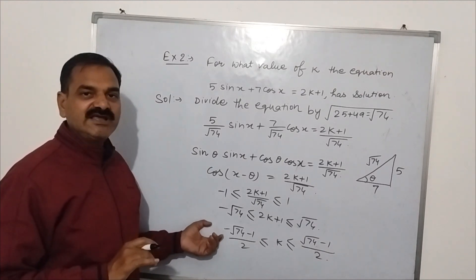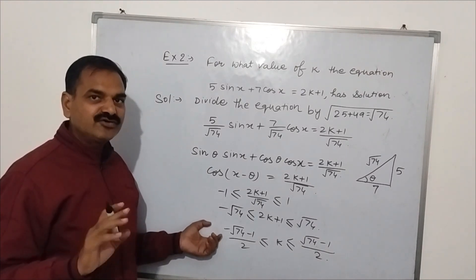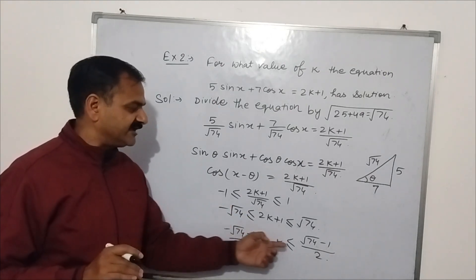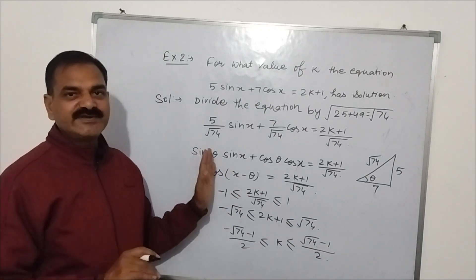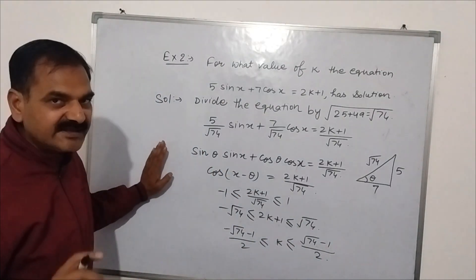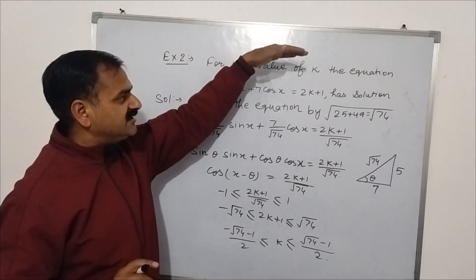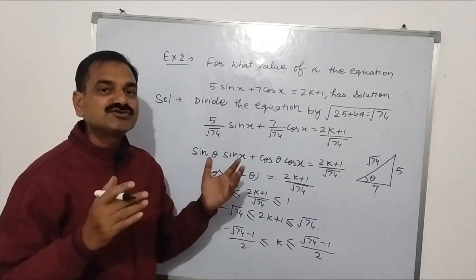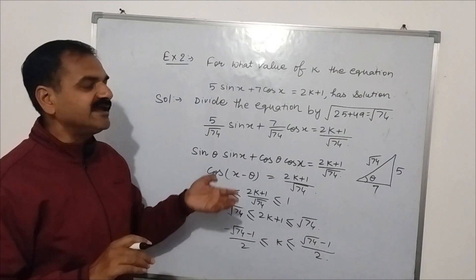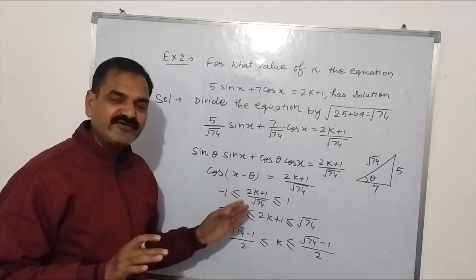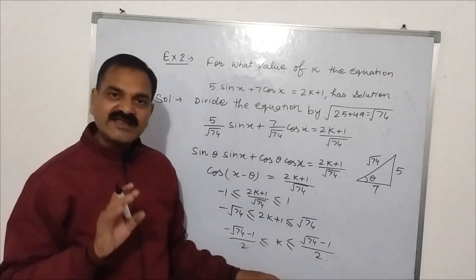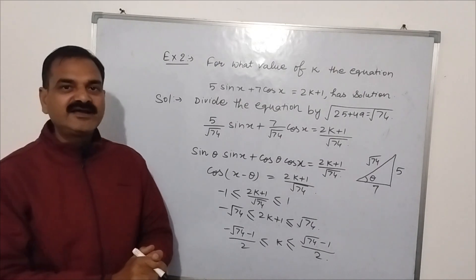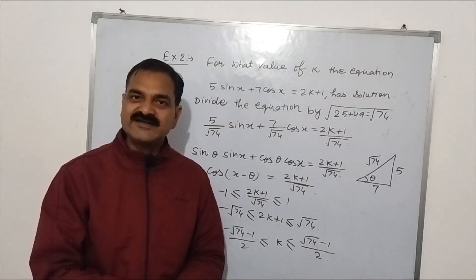You can also compute the approximate value: √74 is close to 8 point something, so the upper bound is about 3 point something and the lower bound is about −4 point something. If k lies in this interval, the equation has solutions. Today we found general solutions of the A sin x + B cos x = C type equation by another method — the division method — where, unlike the squaring method, we get direct solutions without needing to eliminate extraneous roots. If you liked this video, please like, share, and subscribe.